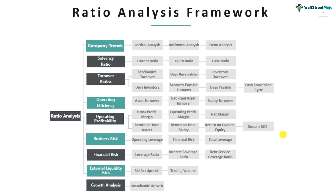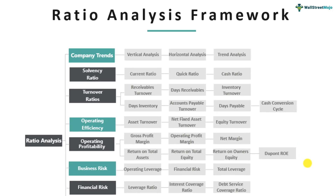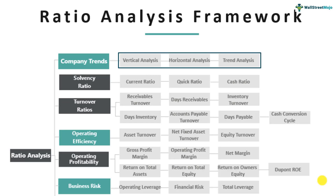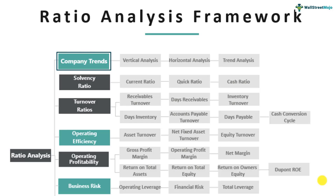I am giving you a top-level overview of how this framework works. When you look at ratio analysis, there are three or four bifurcations. First is how to analyze the company's trends — at the top, you can see things like vertical analysis, horizontal analysis, and trend analysis. These help you identify the right questions: whether the company is growing, whether certain line items like gross profits are shrinking or increasing, and other aspects which we'll discuss in company trends.